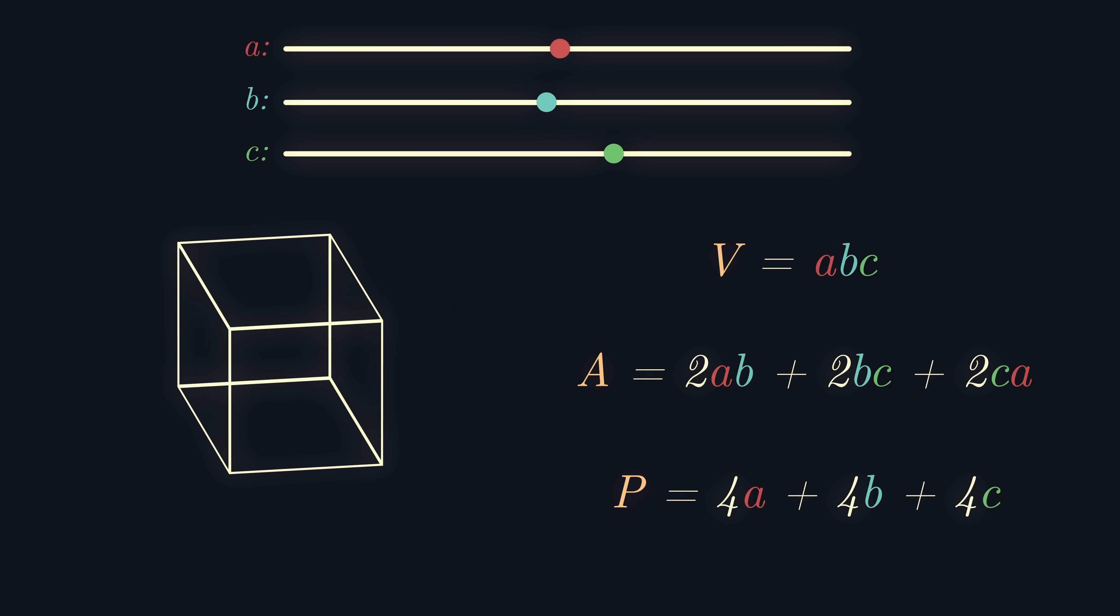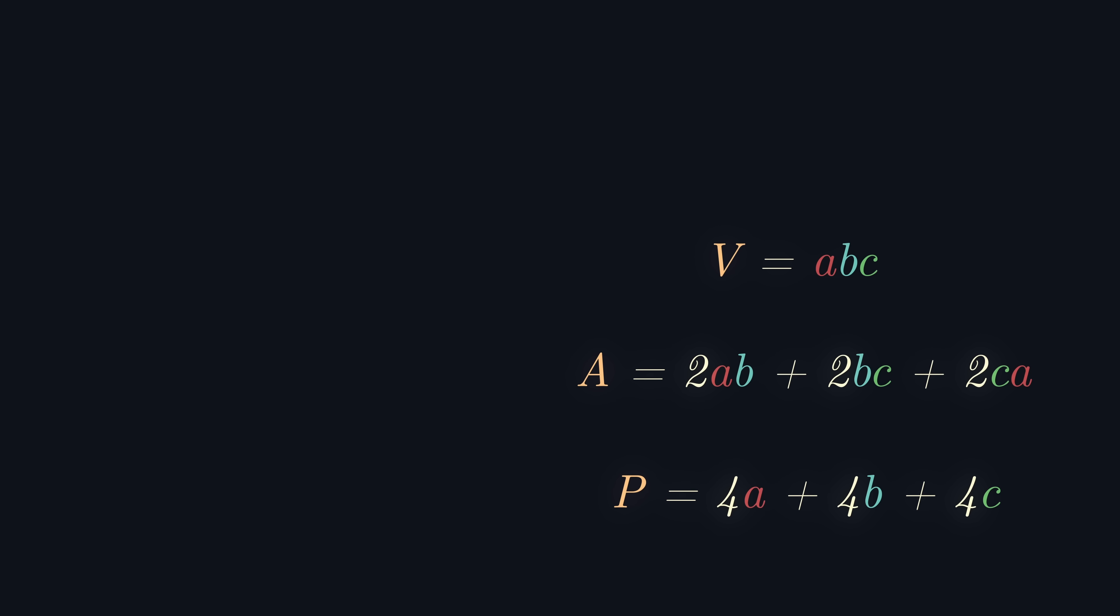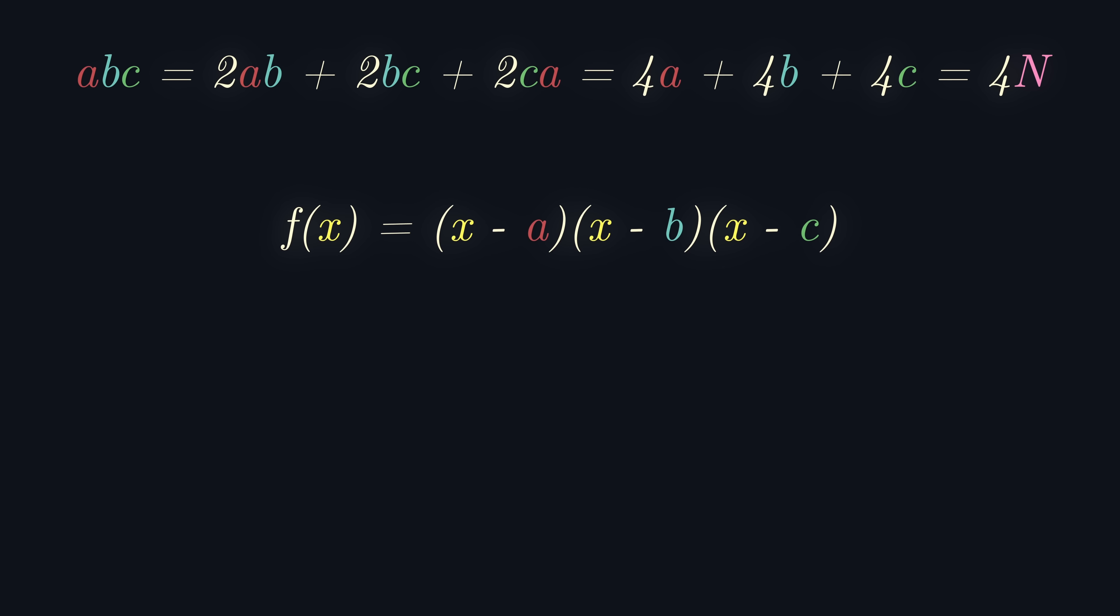Again, we want to set all of these equal to each other. So say that the volume equals the surface area equals the perimeter equals some positive real constant 4n. Just like before, consider letting a, b, and c be the roots of some cubic polynomial f of x rather than quadratic. Then, by the factor theorem, f of x equals (x minus a)(x minus b)(x minus c).